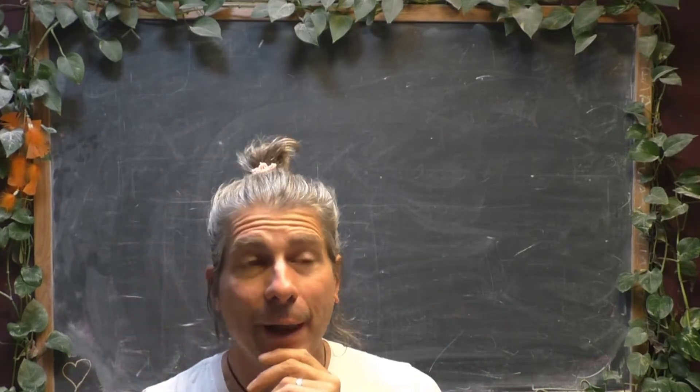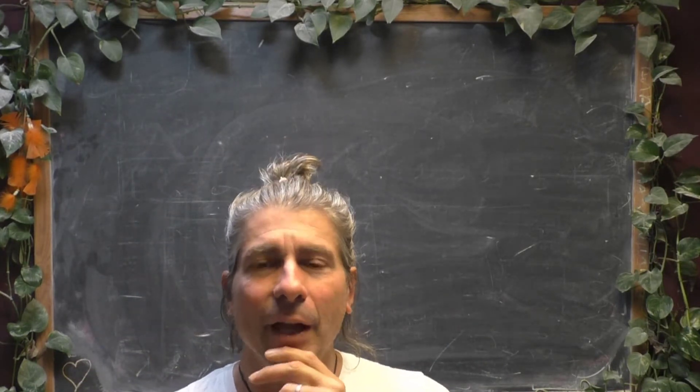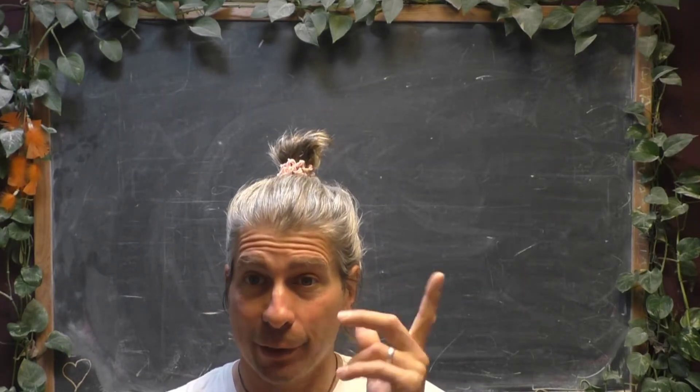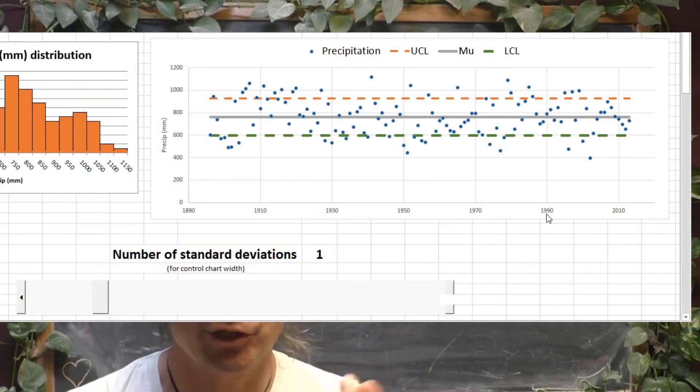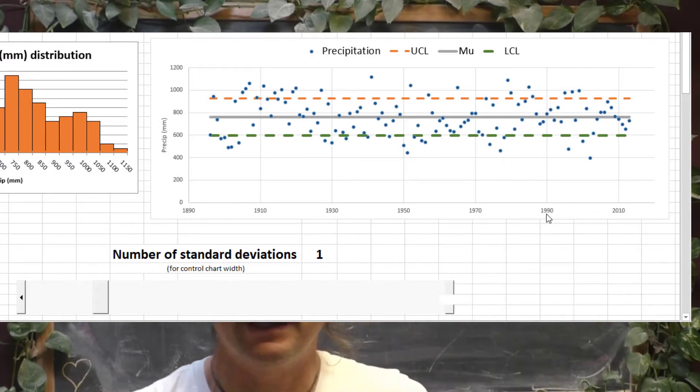Relatively recently, a former student who's now a hydrologist with the state of Colorado, I believe, needed my help to look at stream flow volumes. So here's a look at the spreadsheets we were working together. And this student's concern was, well, how do I measure unusual stream flows based on this historical data of about 100 years? So I set up the idea of control charts.